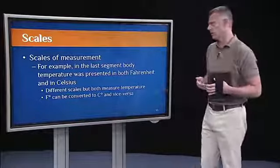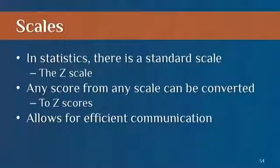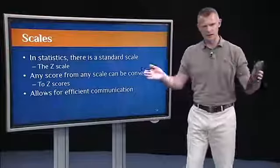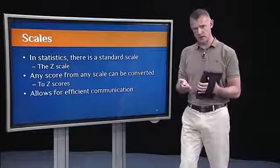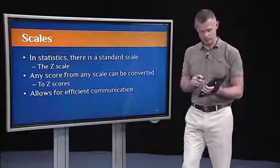But in statistics, what's nice is there's a standard scale. And it's called the Z scale. So any score from any scale can be converted into a Z scale with Z scores. And this allows for really efficient communication across statisticians. Scientists and different researchers can share data. If everything's converted to a Z scale, it's very easy to interpret.